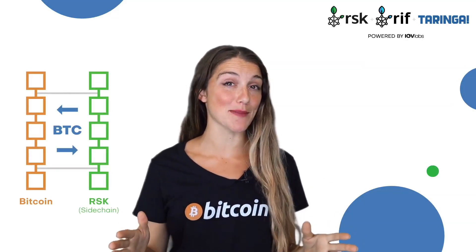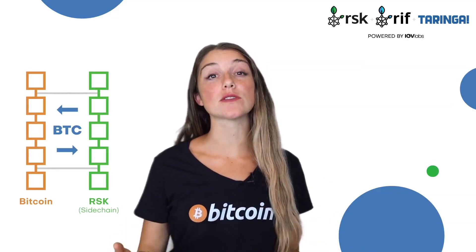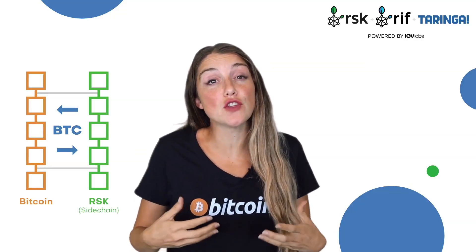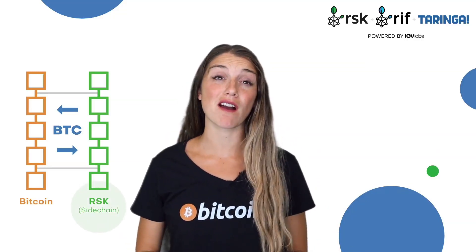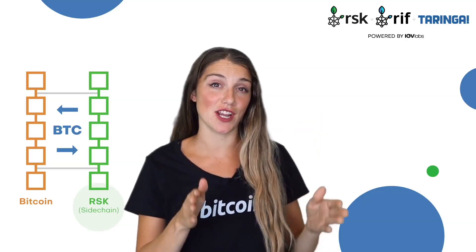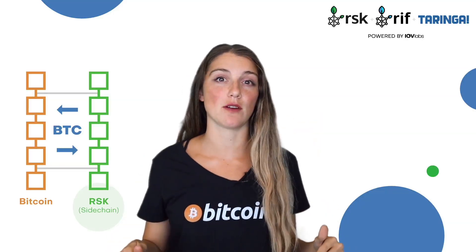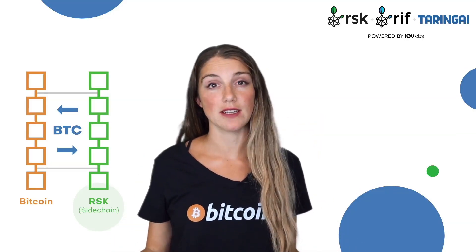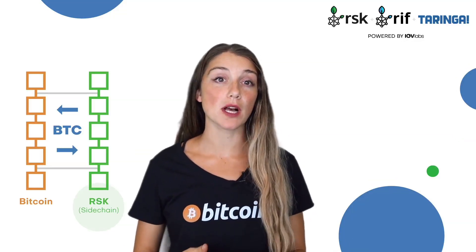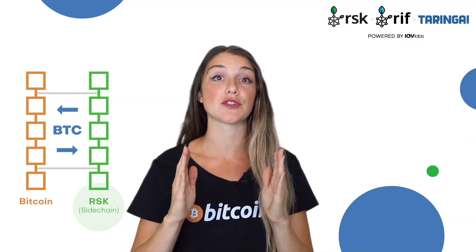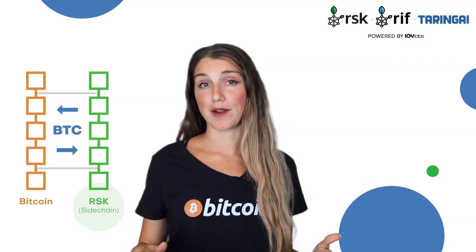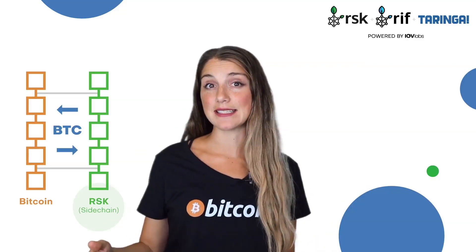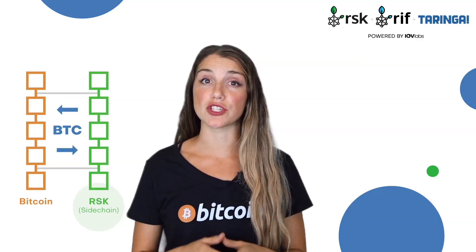To achieve the objective of being the perfect complement to Bitcoin, RSK uses multiple concepts that fuse together harmoniously. First, it's important to note that RSK is a side chain — a secondary blockchain that runs parallel to the Bitcoin blockchain. Its currency, smart bitcoins or RBTC, has a one-to-one relationship to Bitcoin.